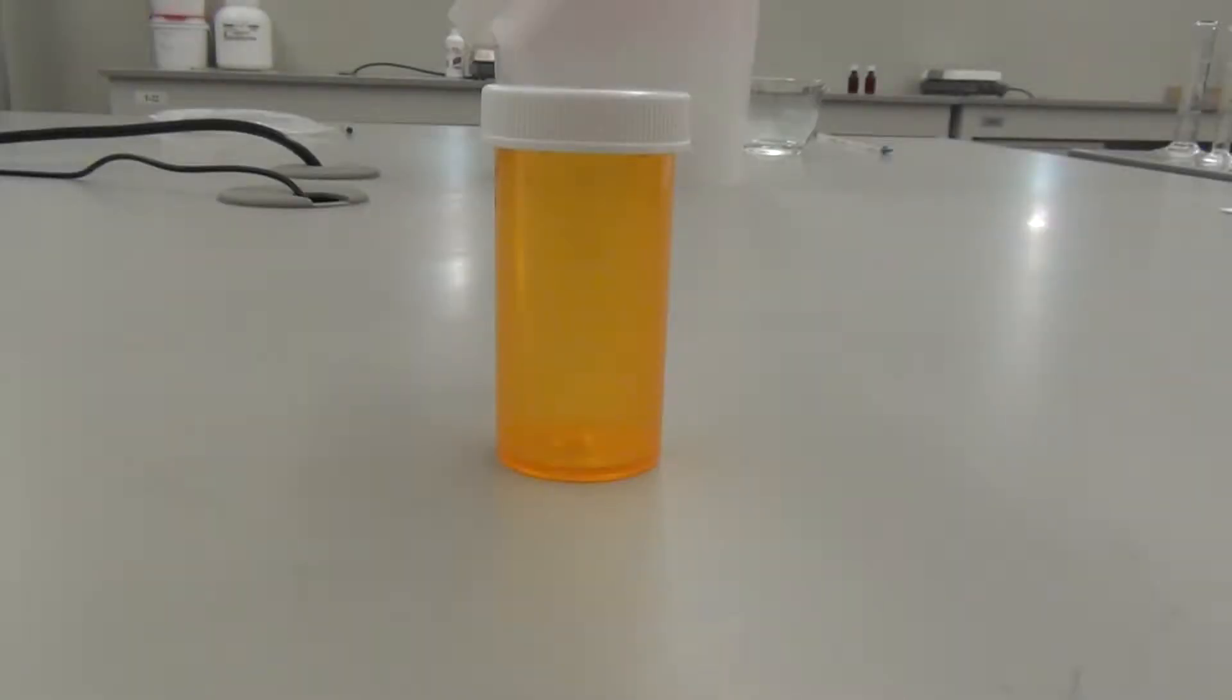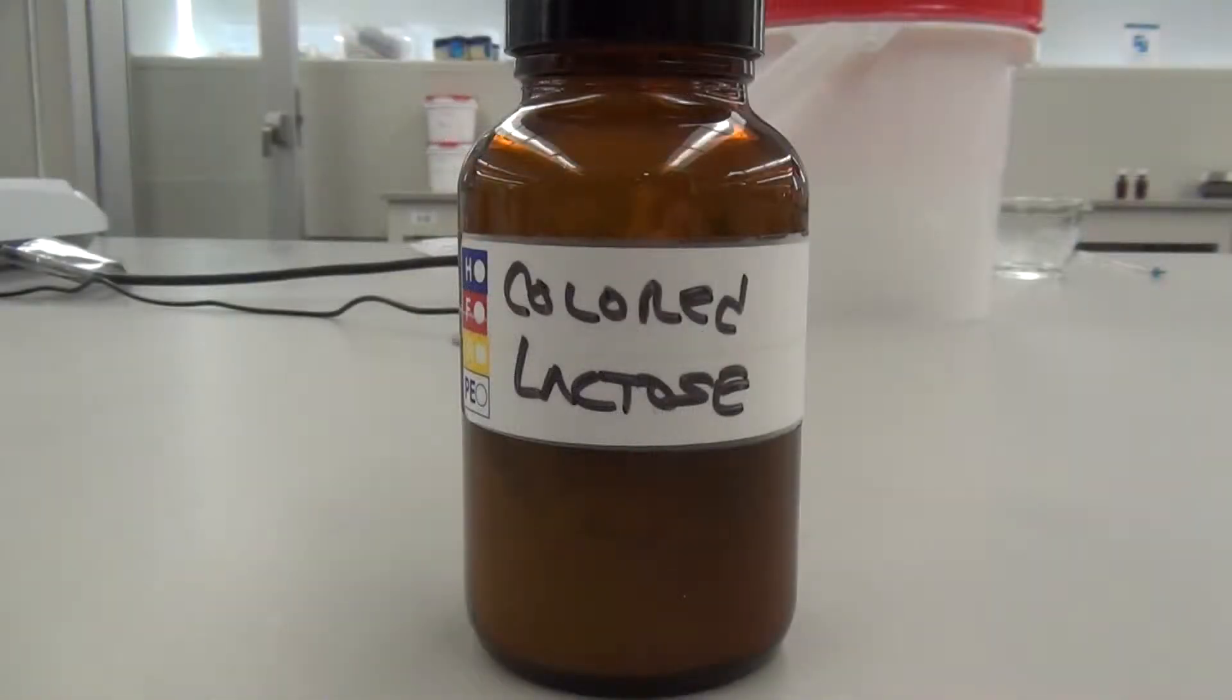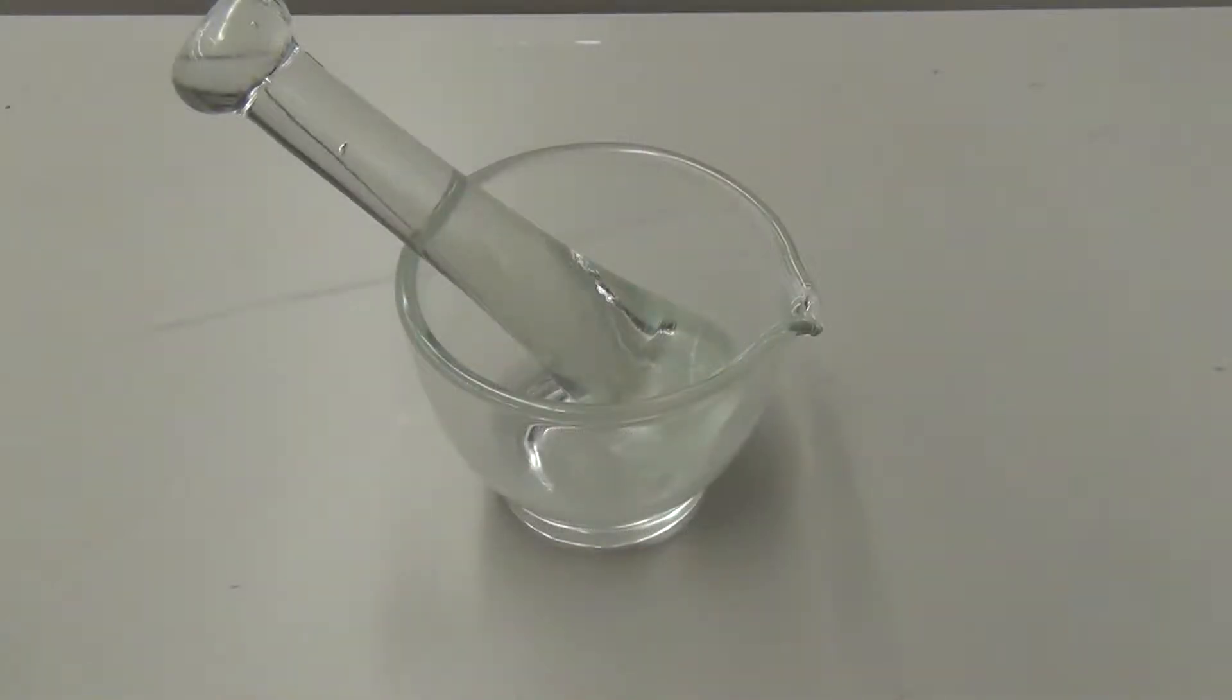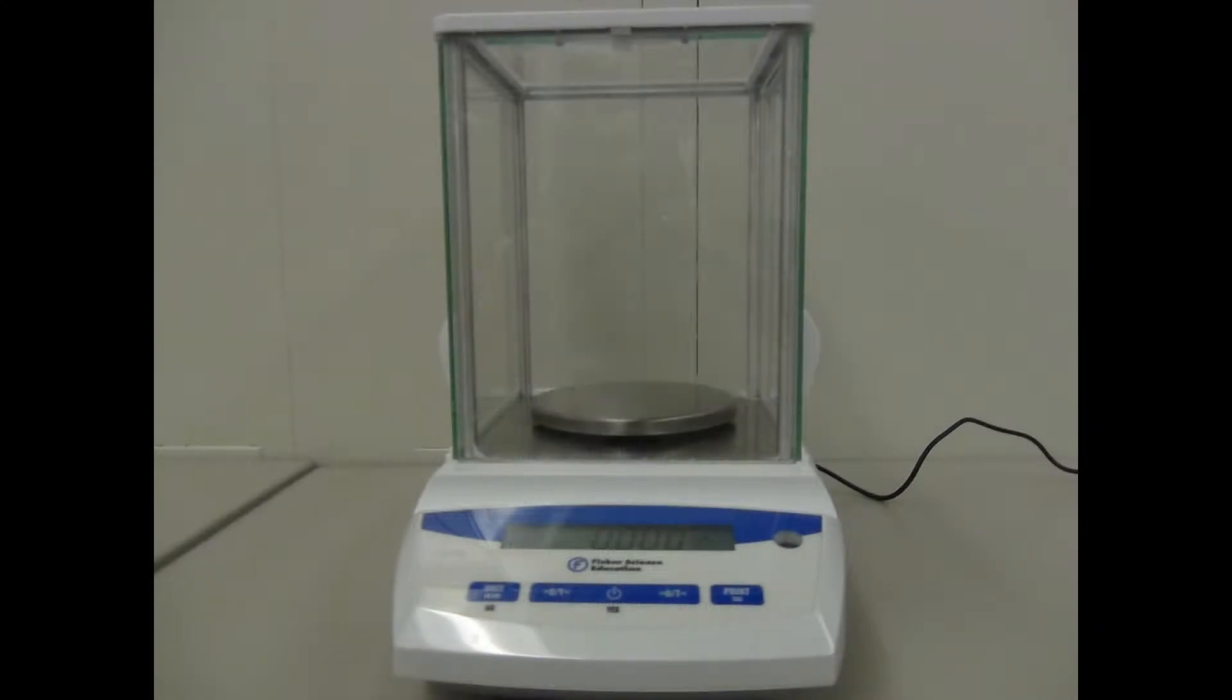The first thing you are going to want to do is gather all of your materials. You will need a pill bottle, lactose powder, colored lactose, and empty capsules. The capsule size is dependent on how much drug you are going to use. You'll also need a glass mortar and pestle, weighing papers, and an electronic balance.